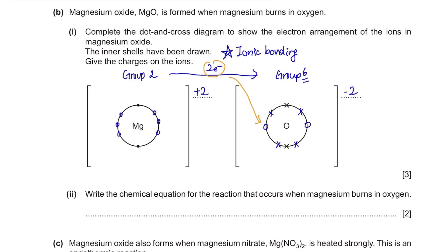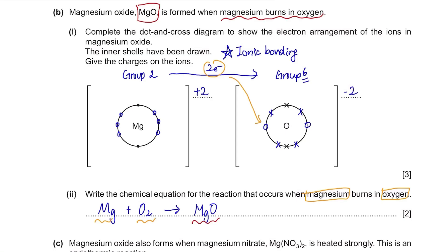Write the chemical equation for the reaction when magnesium burns in oxygen. Starting with Mg + O₂ → MgO, once balanced the equation is: 2Mg + O₂ → 2MgO.